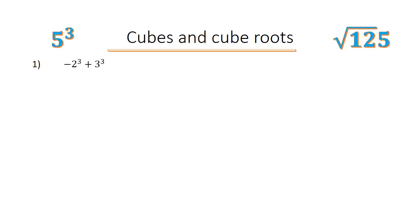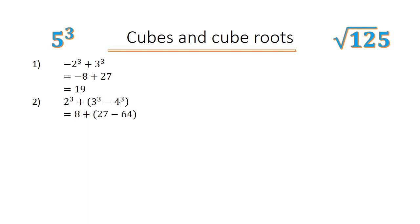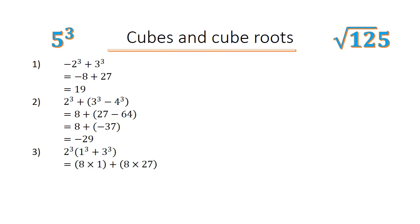Cubes and cube roots — example 13. Negative 2 to the power of 3 plus 3 to the power of 3 equals negative 8 plus 27 equals 19. 2 to the power of 3 plus (3 to the power of 3 minus 4 to the power of 3) equals 8 plus (27 minus 64) equals 8 plus negative 37 equals negative 29. 2 to the power of 3 times (1 to the power of 3 plus 3 to the power of 3) equals 8 times 1 plus 8 times 27 equals 8 plus 216 equals 224.